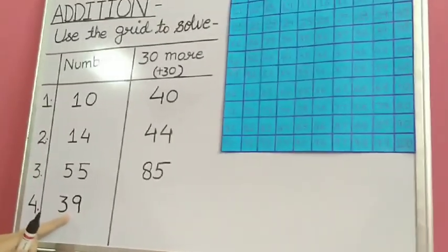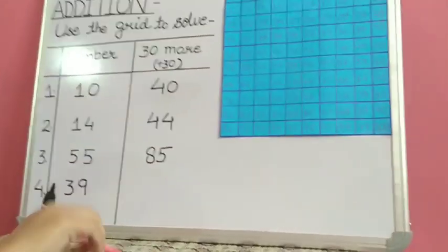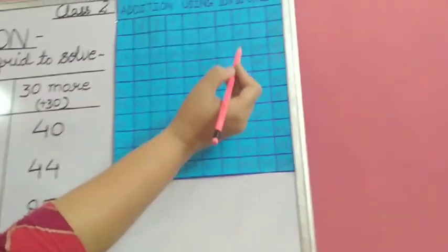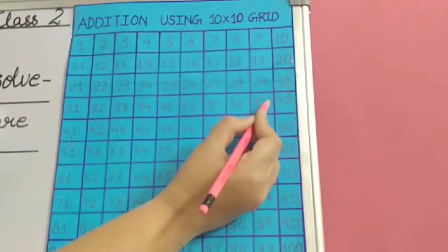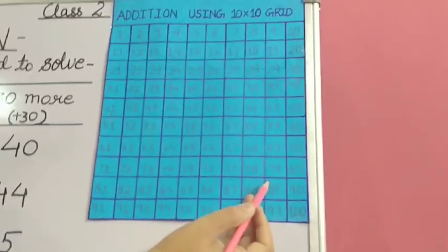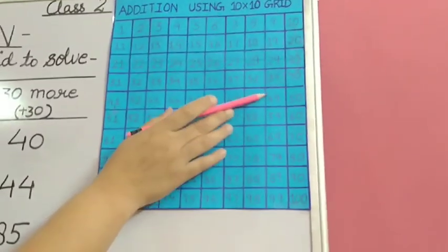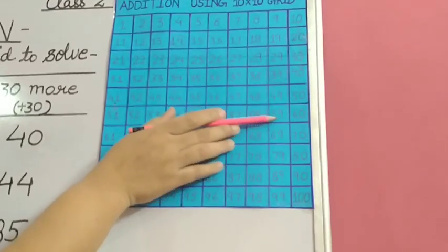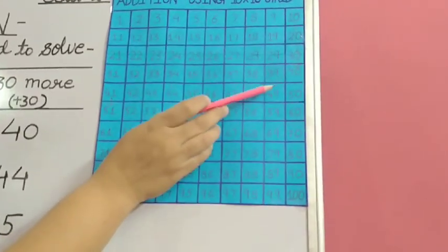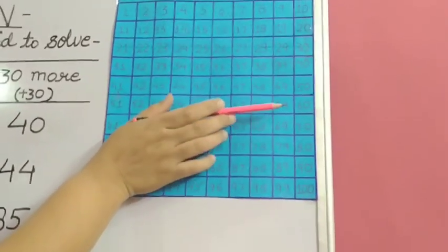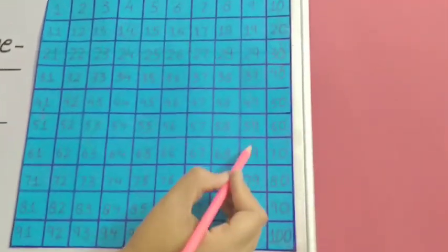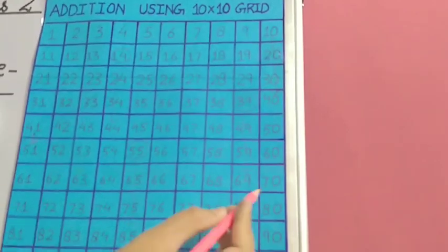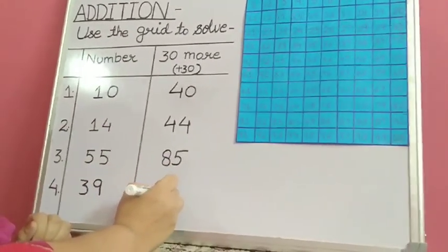Now another number: 39. Here is 39 on the grid. We have to add 30, so we will move 3 rows below — 1 row, 2 rows and 3 rows. We will reach 69. The answer is 69.